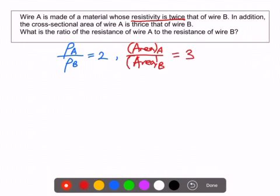So you are asked to find the ratio of resistance of A compared to the resistance of wire B. The question is: resistance of A compared to resistance of B?